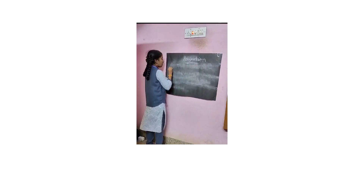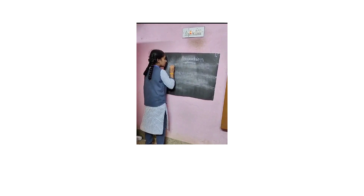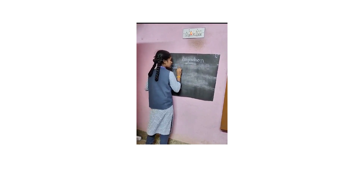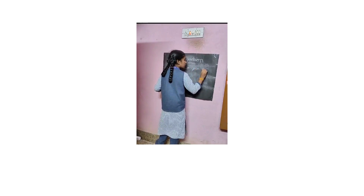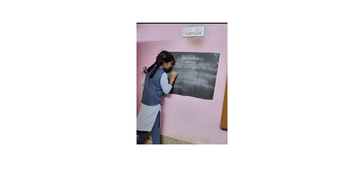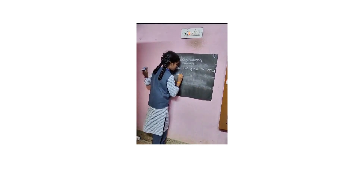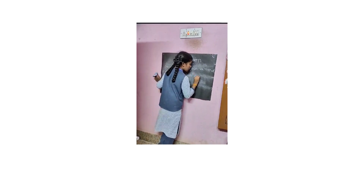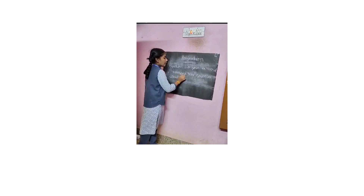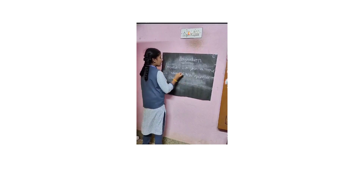Today we are talking about Conjunction. Conjunction is a joinable. For example, Ram and Harry go in your school. Ram and Harry — you join Ram and Harry. So, that is your Conjunction.